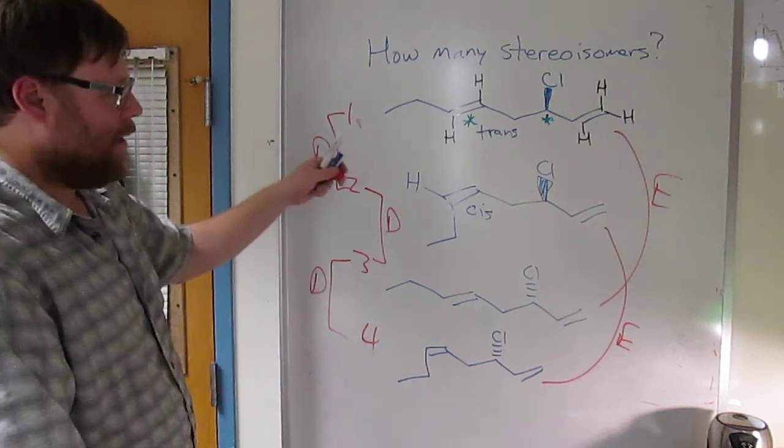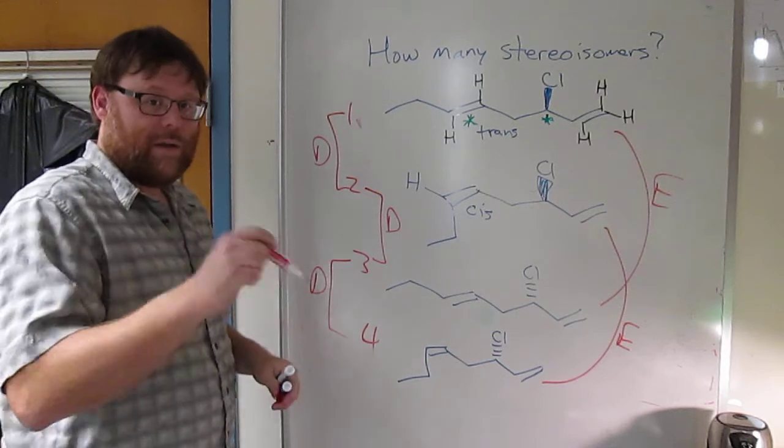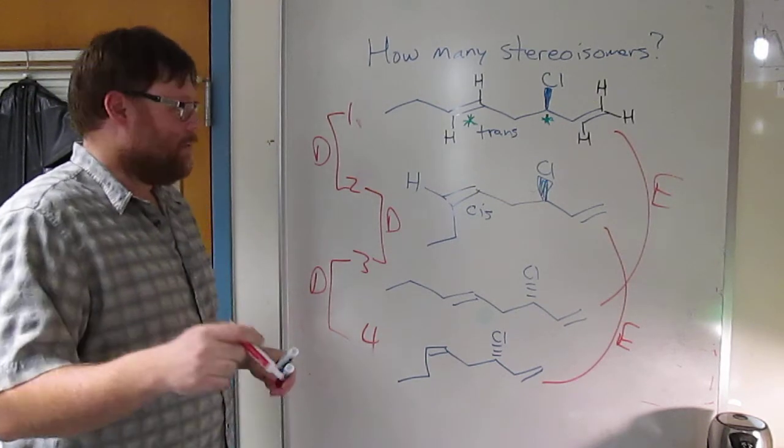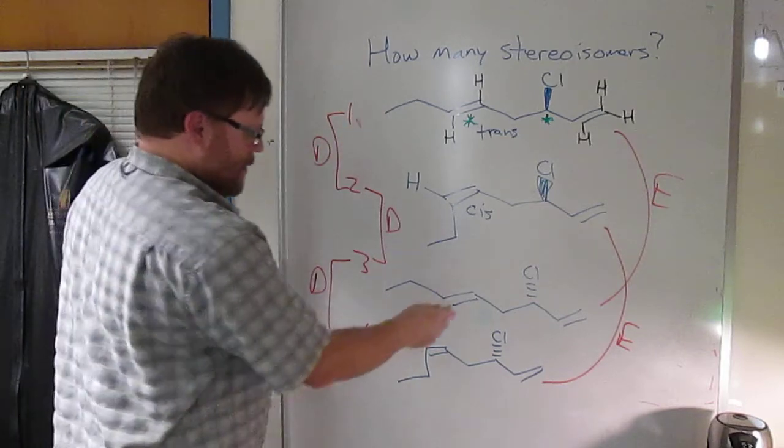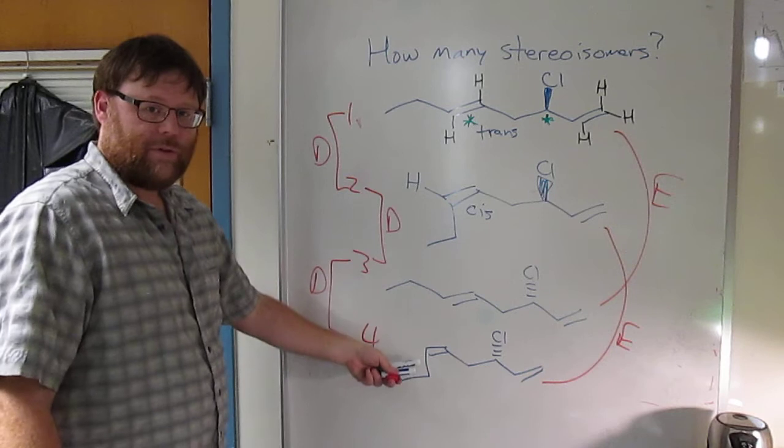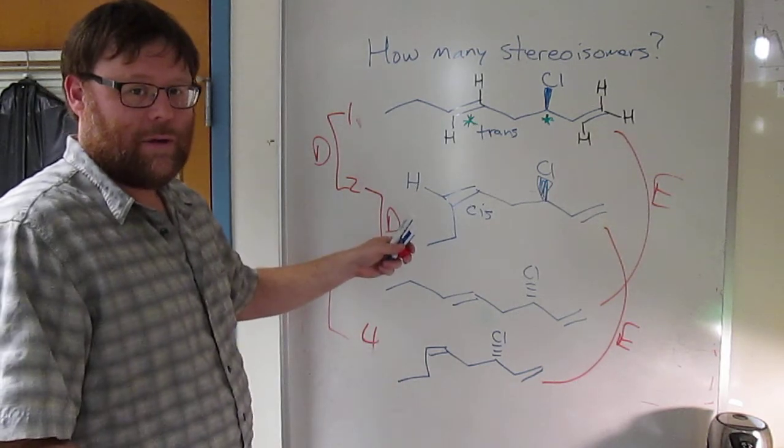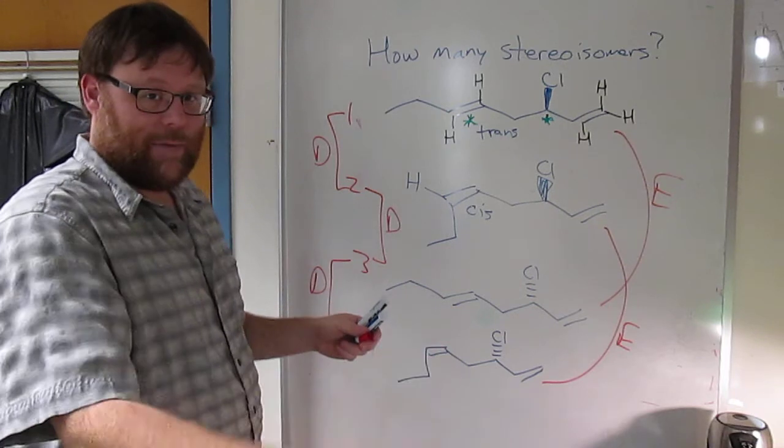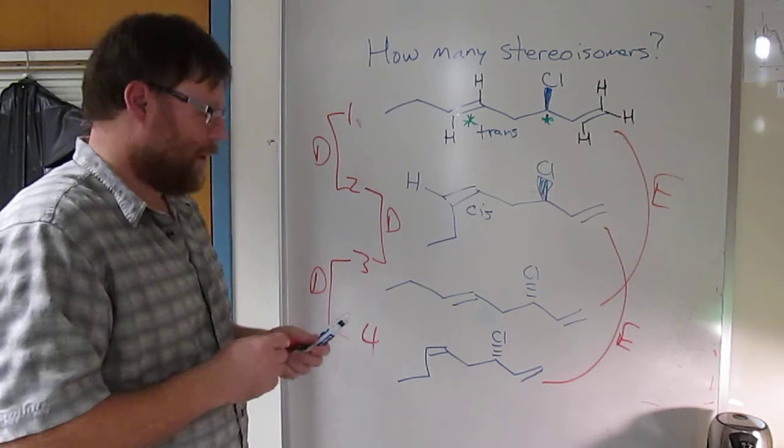Again, in a set of four stereoisomers, any given molecule will only have one enantiomer, right? So there are four molecules here. Molecule one has one enantiomer, that is molecule three. It's got to be diastereomers with the other two. If you have 512 stereoisomers, any given molecule will have one enantiomer and the rest have to be diastereomers. Okay?